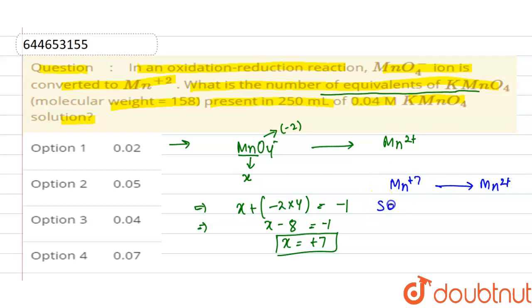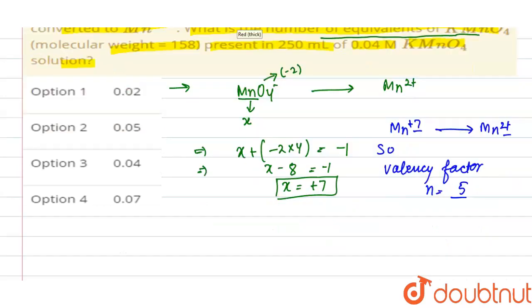So valency factor, n, equals 5, which is the change in oxidation state from +7 to +2. Now we can